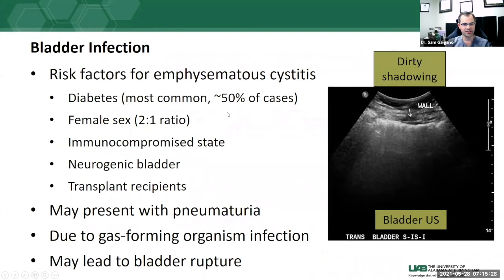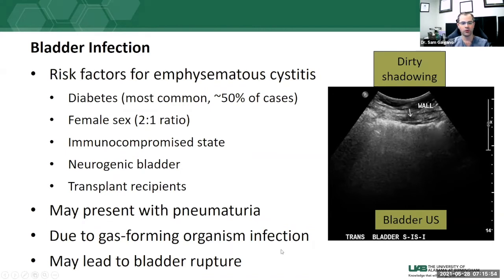Emphysematous cystitis patients may describe pneumaturia — passing air during urination — and the infection is caused by a gas-forming organism. If left untreated and severe, it could lead to bladder rupture. Risk factors include diabetes and immunosuppression. Some cases are treated surgically and others medically. Unlike regular inflammation, this is an important finding to communicate to the clinical team.